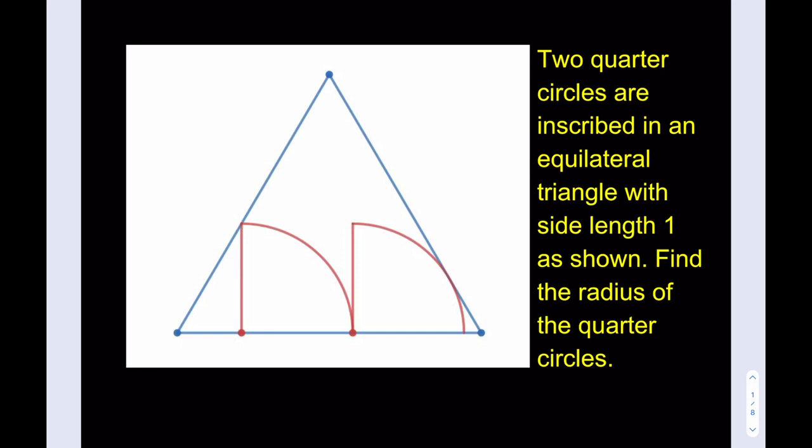Since we're looking for the radius of the quarter circles, I'm just gonna call them R. So it's gonna be an R and that's gonna be an R and it's going to be an R as well. Now we're gonna take advantage of the fact that this is a 60 degree angle, and what is that supposed to mean?